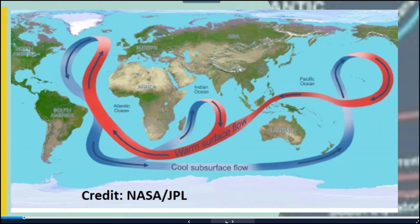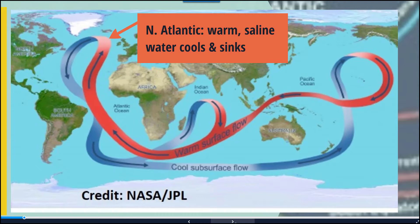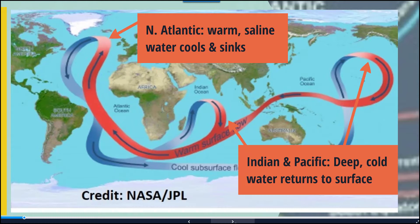In this image, you can see that the global conveyor belt of ocean water movement consists of a warm water surface flow that occurs in the Pacific Northwest region, follows down through the Indian Ocean and up through the Atlantic. In the North Atlantic, water sinks and turns into subsurface cooled water that is colder and denser, traveling more deeply throughout the oceans. Part of that water drifts up into the Indian Ocean, and another stream flows back up into the Pacific Ocean. So the North Atlantic is where warm saline waters cool and sink, while the Indian and Pacific Oceans are where deep cold water returns to the surface.